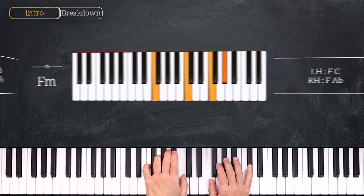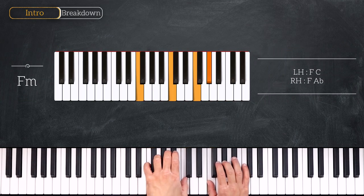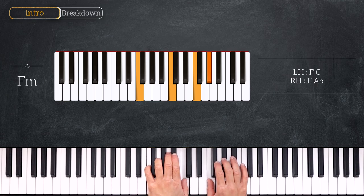From here we'll play this F minor chord. Playing F, C on the left and F, Ab on the right hand.